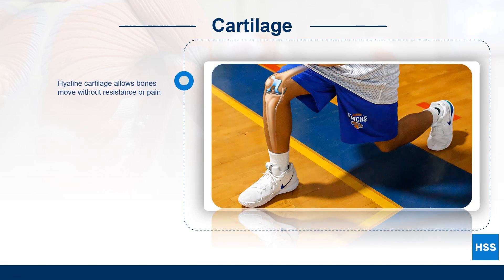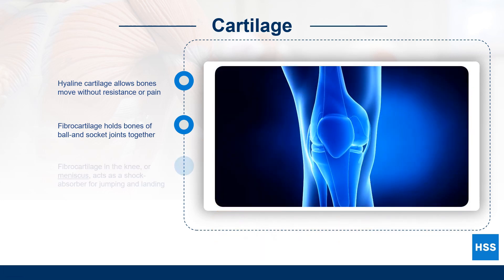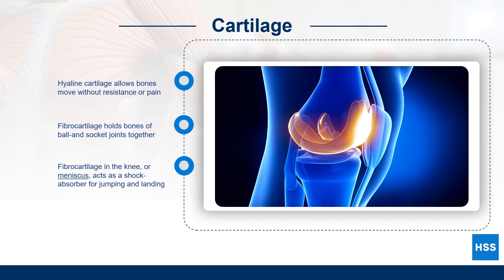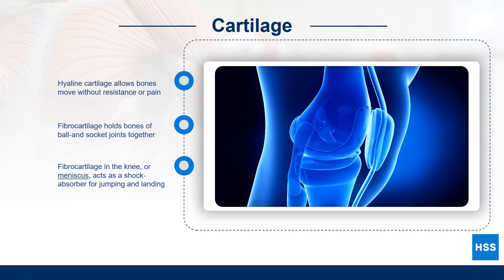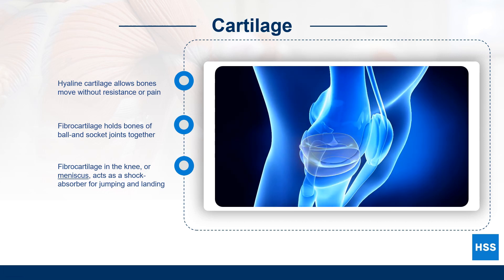In ball and socket joints, another type of cartilage known as fibrocartilage acts to hold the bones together to prevent joint dislocation. Fibrocartilage in the knee, also known as the meniscus, acts as a shock absorber for jumping and landing.